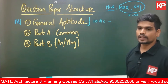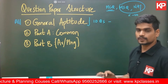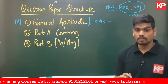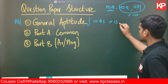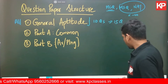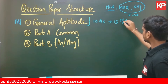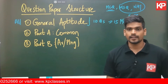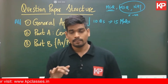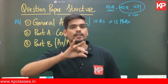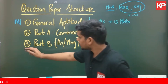General Aptitude always has 10 questions, all of multiple choice type, meaning all ten questions carry negative marking. These 10 questions give a total weightage of 15 marks. All 15 marks carry the burden of negative marking if you have an incorrect answer.